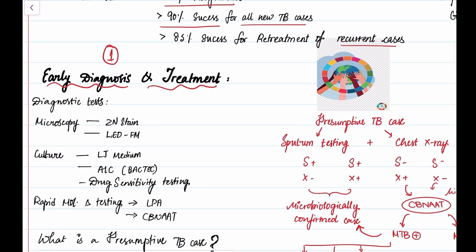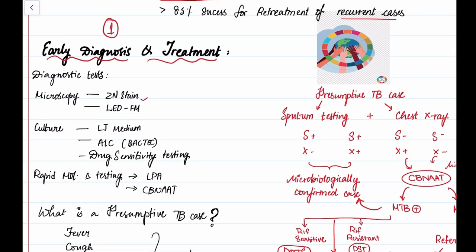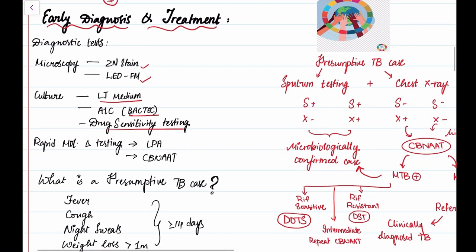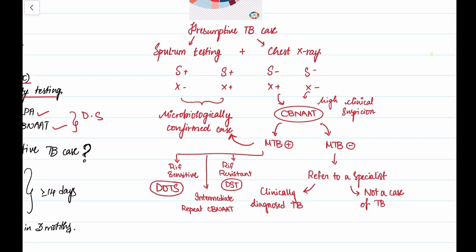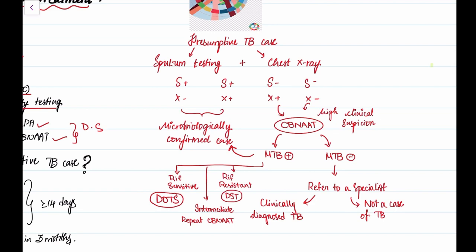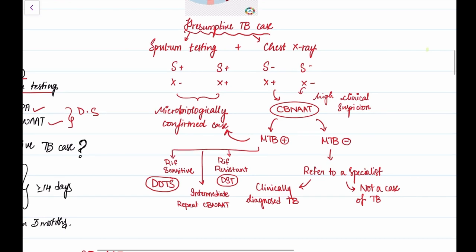For diagnostic tests, we have in microscopy: ZN staining and LED fluorescent microscopy. In culture: Lowenstein-Jensen medium, the BACTEC culture, and drug sensitivity testing. In rapid molecular diagnostic testing, we have the line probe assay and CB-NAAT. These are mainly for confirmation tests and for drug sensitivity. Here I have a diagnostic algorithm for TB, and if we know this, it's very simple to approach TB.